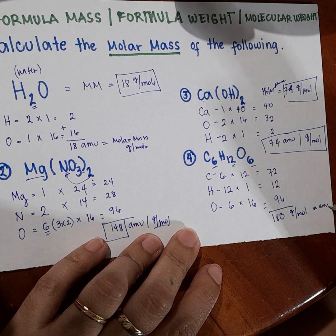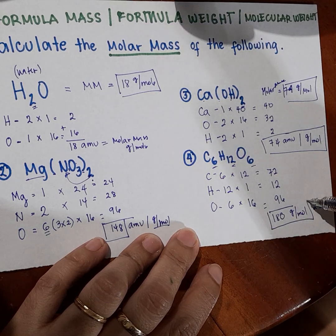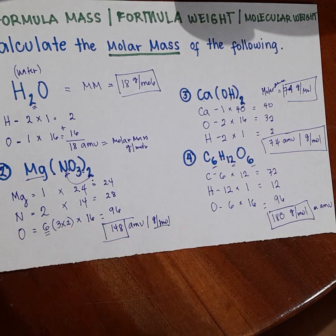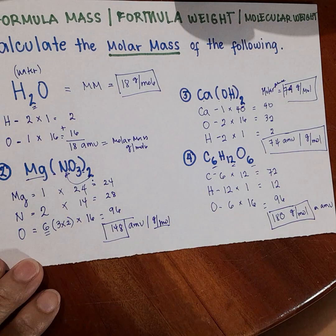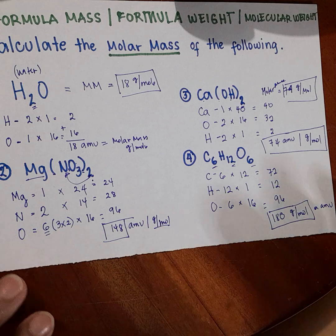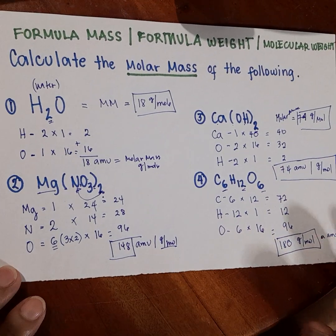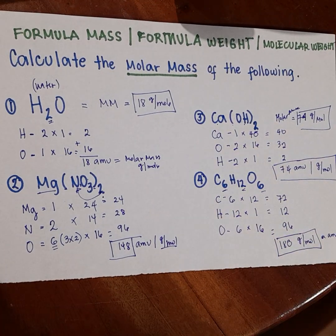Adding 72 plus 12 plus 96, we get 180 grams per mole, or 180 atomic mass units. So 180 grams per mole is the formula mass and molar mass of glucose.